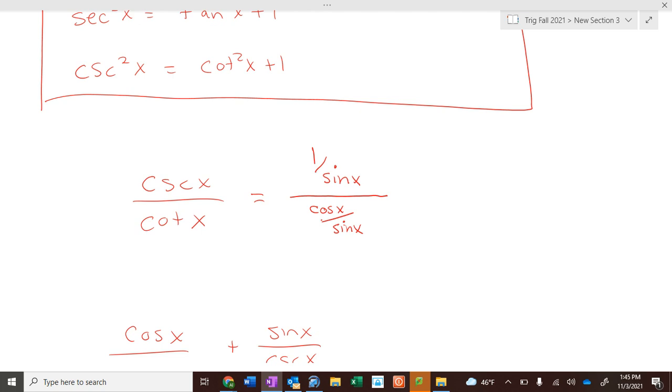A way to get rid of a complex fraction is to multiply by the denominator of the denominator. Multiply both the numerator and denominator by the denominator of the denominator. So, what's the denominator of the denominator? Sine of x. So, we're going to multiply this by sine of x and this by sine of x. When we multiply by sine of x, it's really sine of x over 1. So, sine of x and sine of x cancel. So, 1 over 1 is 1 in the numerator. Sine of x and sine of x cancel. So, cosine of x over 1 is cosine of x.